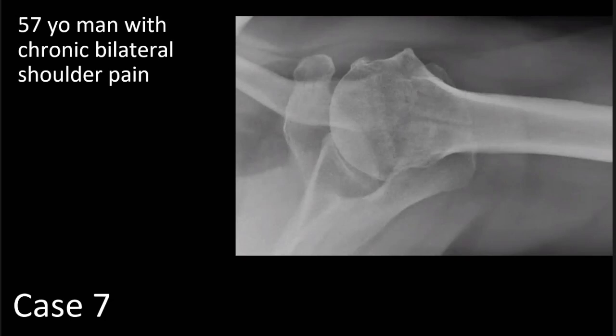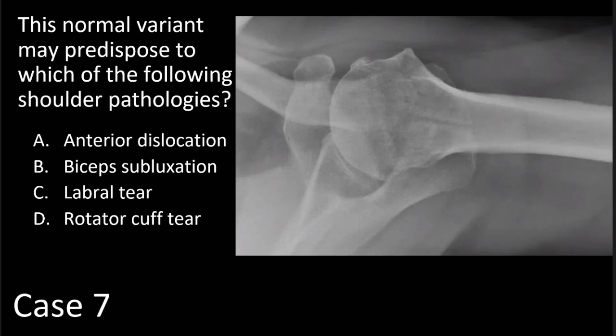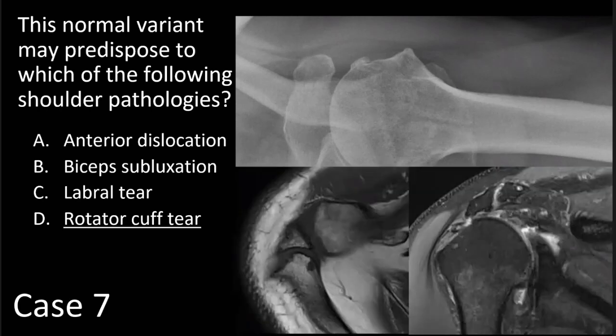Our next case is a 57-year-old man with chronic bilateral shoulder pain. On this axillary view of the left shoulder, we see a well-demarcated lucent line through the distal acromion with well-corticated margins on each side, as indicated by these arrows. This normal variant may predispose to which of the following shoulder pathologies? Anterior dislocation, bicep subluxation, labral tear, or rotator cuff tear? Although this is a little controversial in the literature, the correct answer is rotator cuff tear.